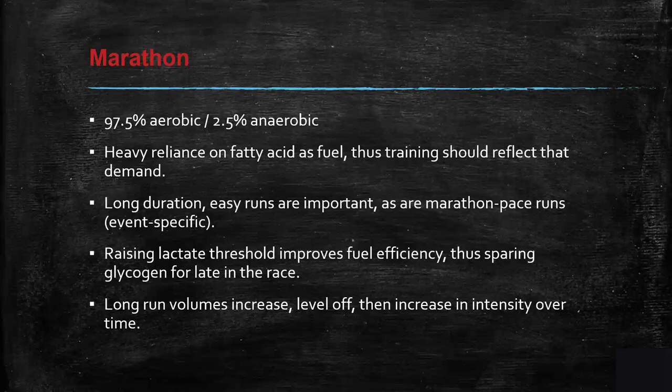The marathon is about 97.5% aerobic and 2.5% anaerobic, with heavy reliance on fatty acids as fuel — so training should reflect that demand. Long-duration easy runs are important. Raising the lactate threshold improves fuel efficiency, sparing glycogen for later in the race. Long run volumes increase, level off, and then intensity increases over time. The goal is to teach the body how to sustain and fluctuate its energy systems so athletes become more adapted to the demands of the event.